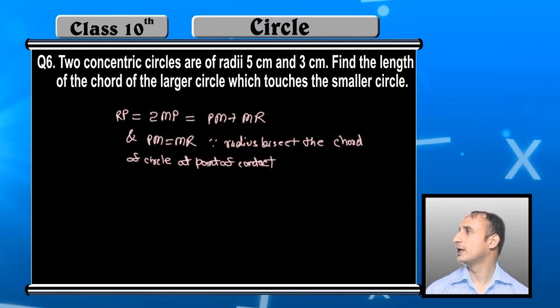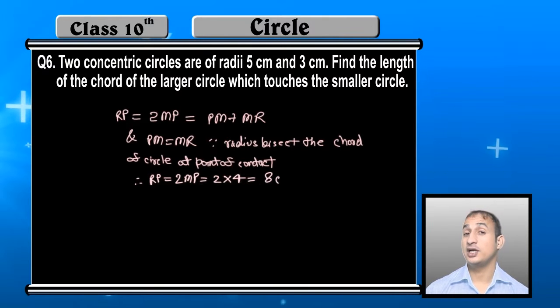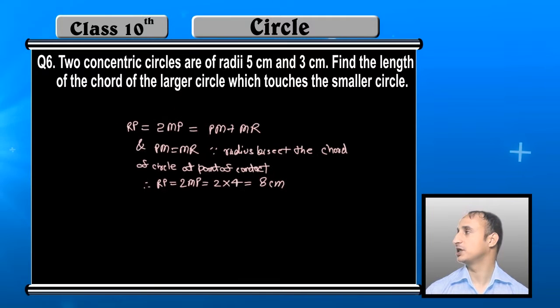You can write the complete reason: therefore RP is equal to 2 times MP, which is 2 times 4, that is equal to 8 cm. And this chord is 8 cm of the larger circle, and this is what we had to find out.